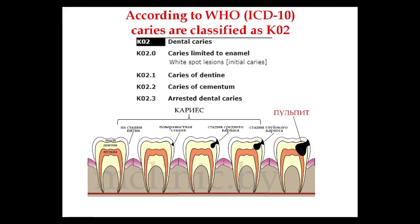The next classification is according to the World Health Organization, or ICD — the International Classification of Disease. Under this system, caries is classified with the code K02, which means dental caries. Different stages of caries have their own specific codes.